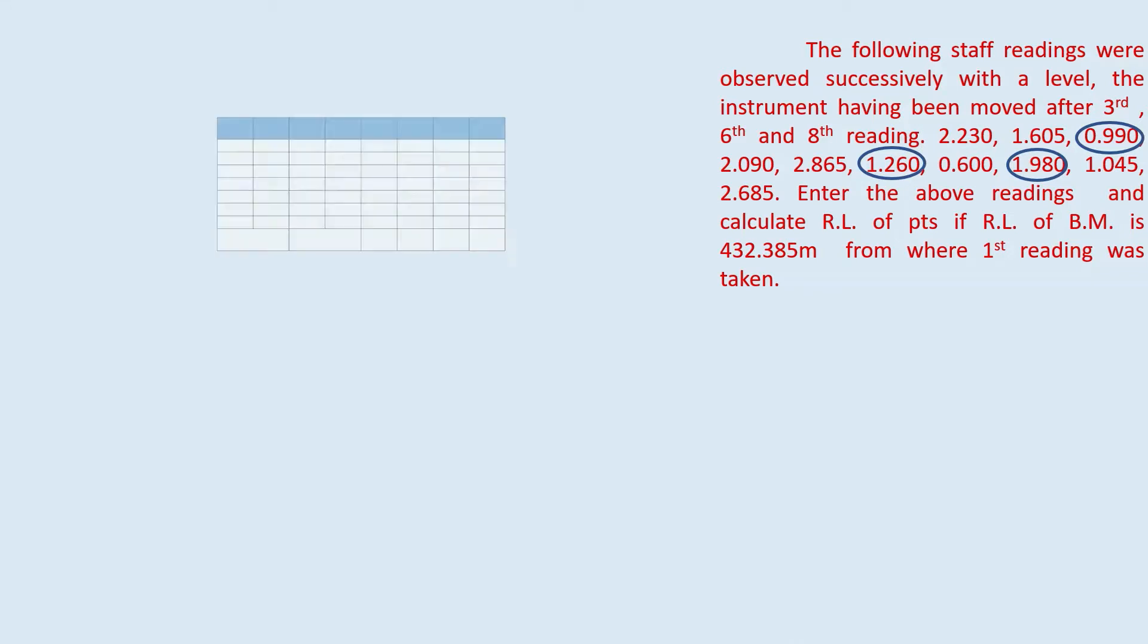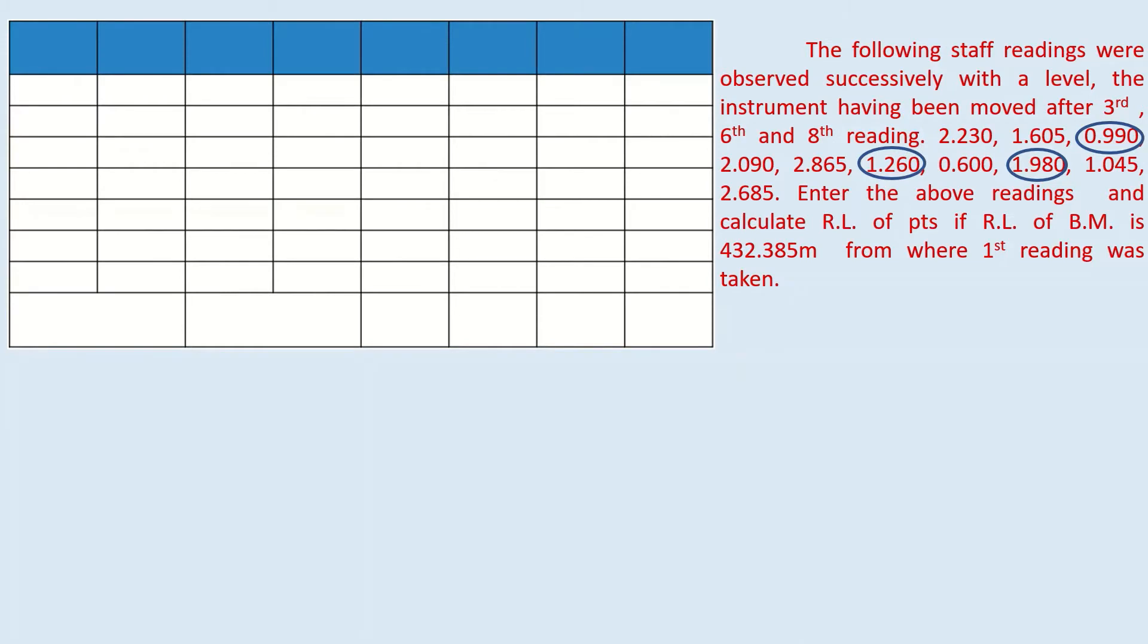Now, open a table. First column is mentioned as station number. Then back side, intermediate side, foresight and then rise, fall, RL and finally you can enter remarks as well.